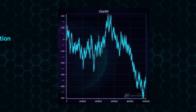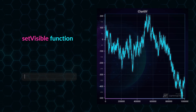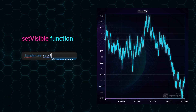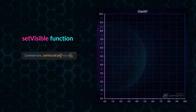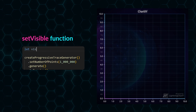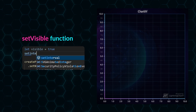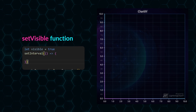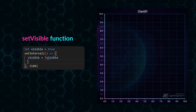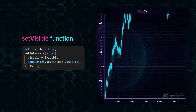We have added new functionality to make showing and hiding chart components simpler. Users occasionally need to hide content so they can later reveal it. It was possible in the previous version using the dispose/restore technique. The newest version makes showing and hiding components simpler and more robust with the setVisible function.